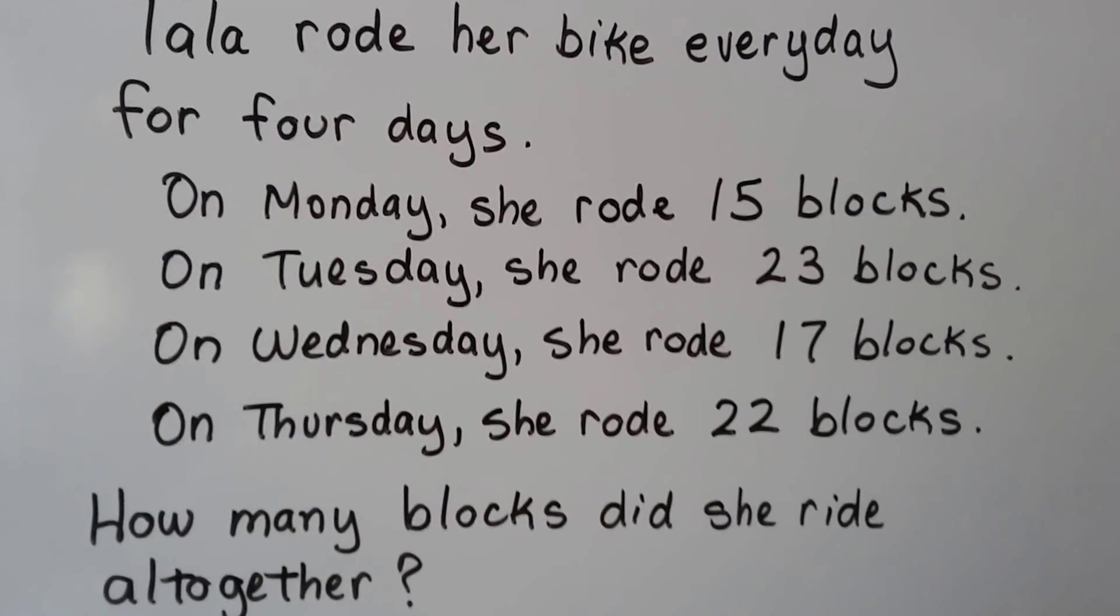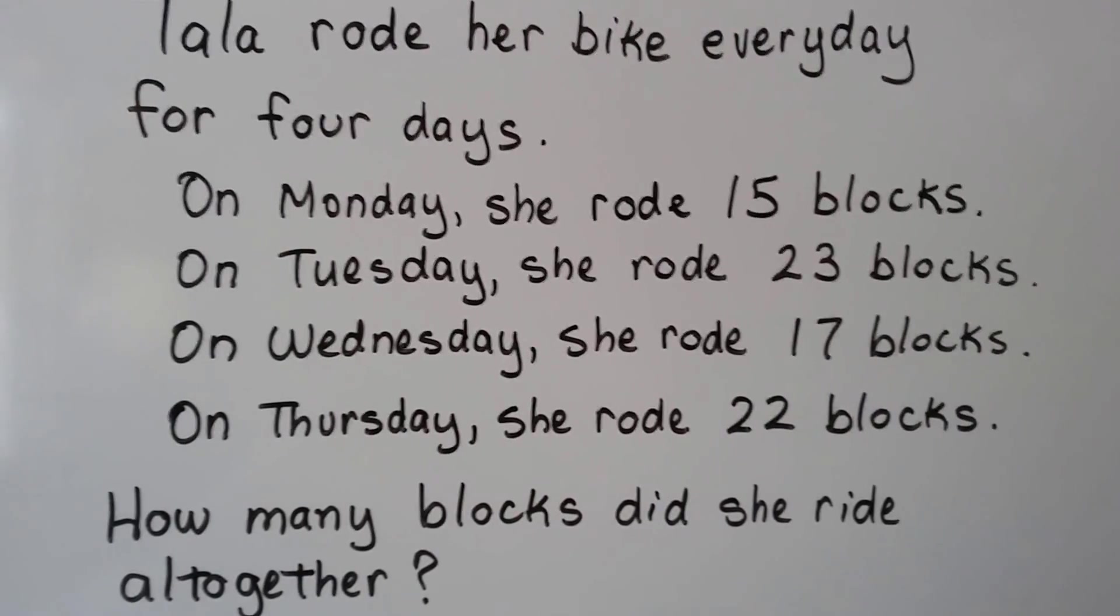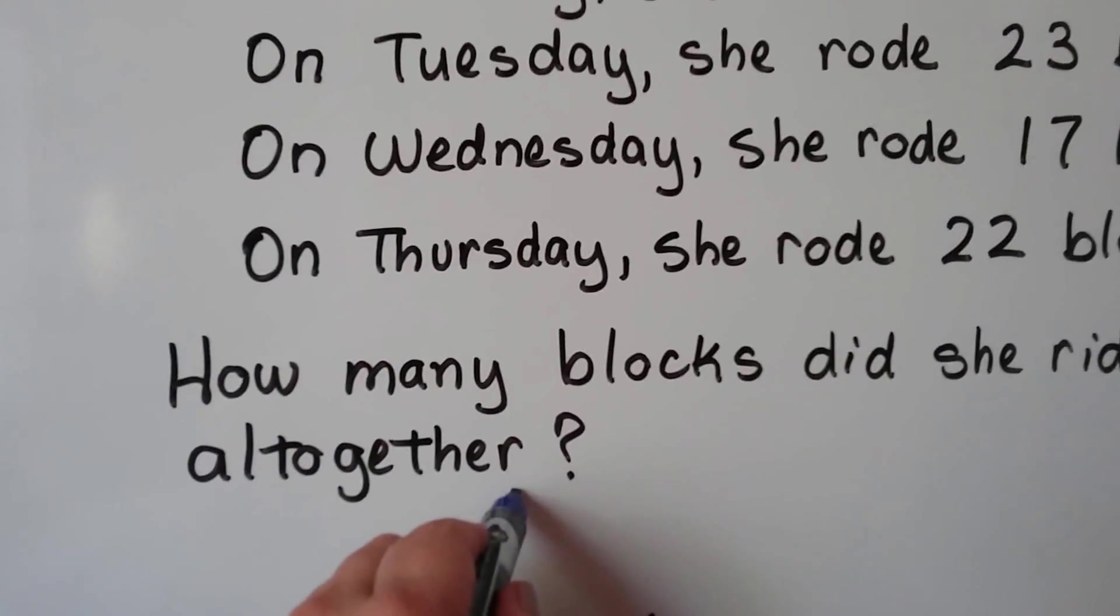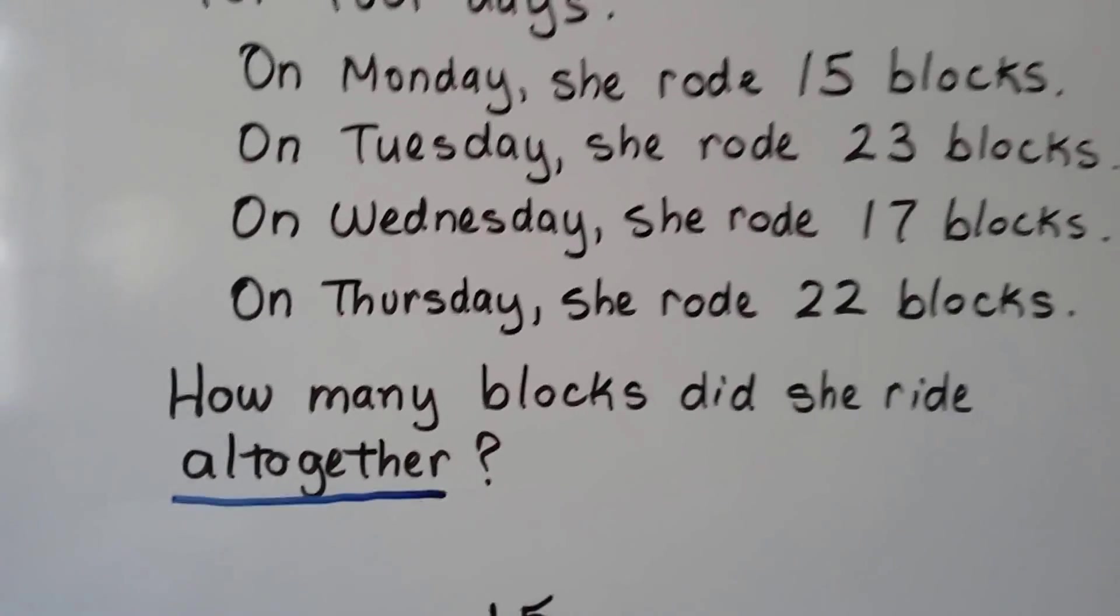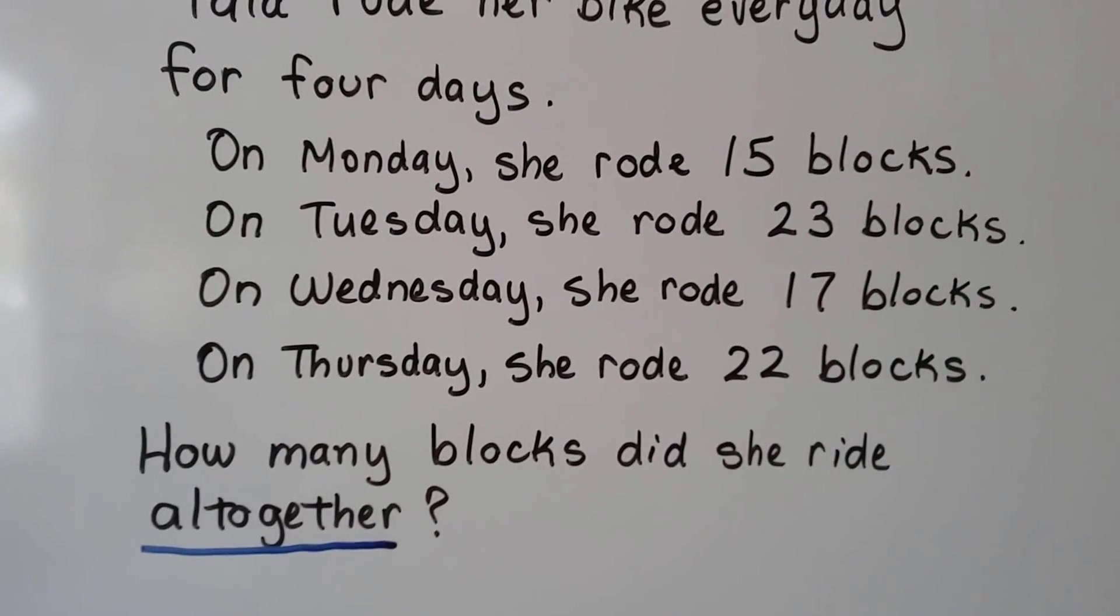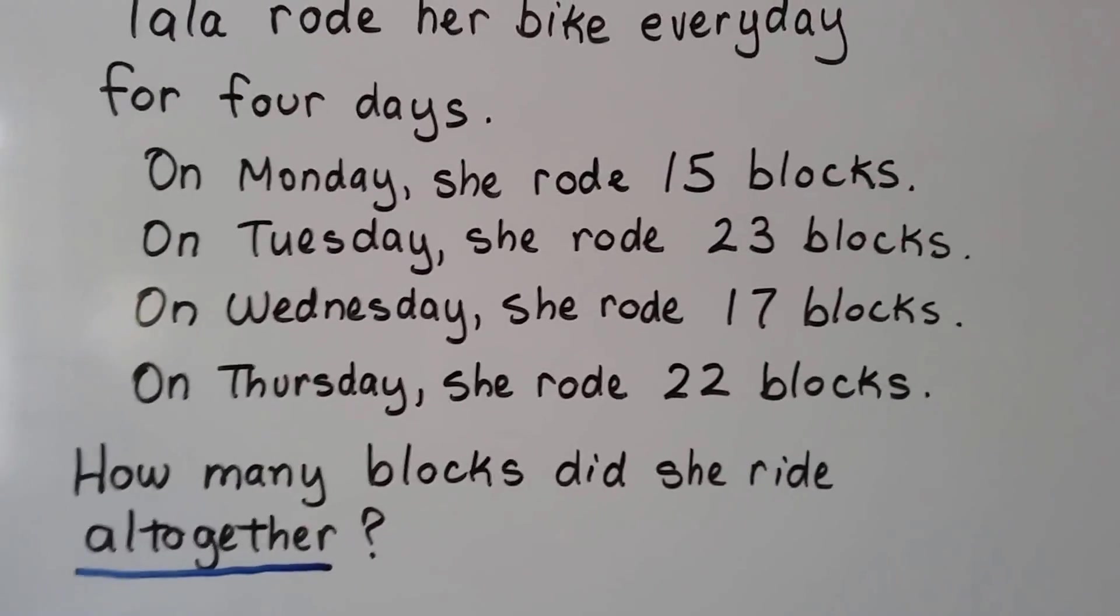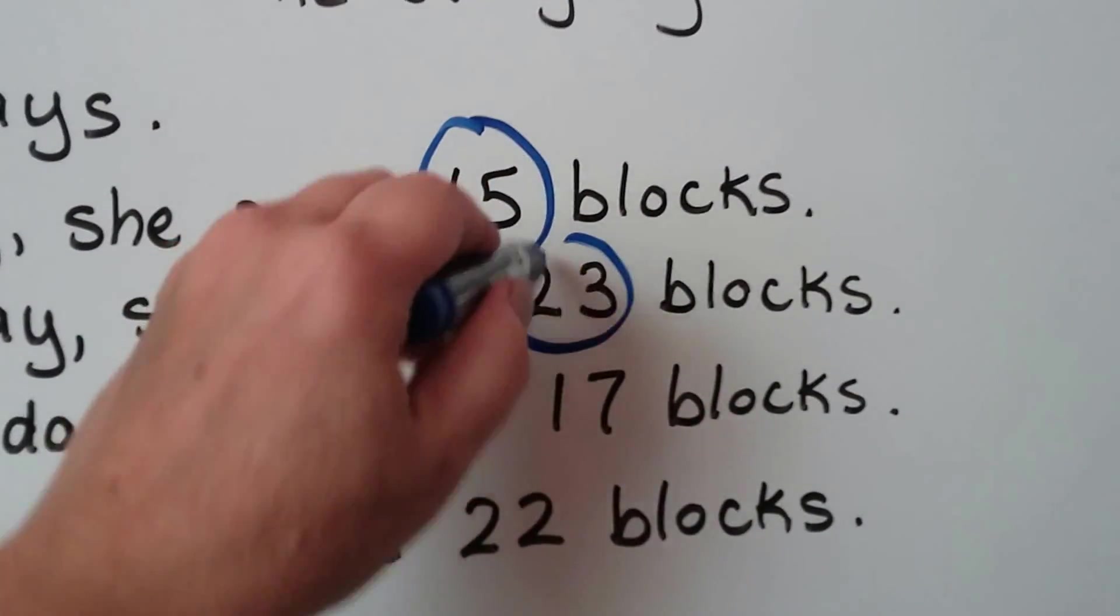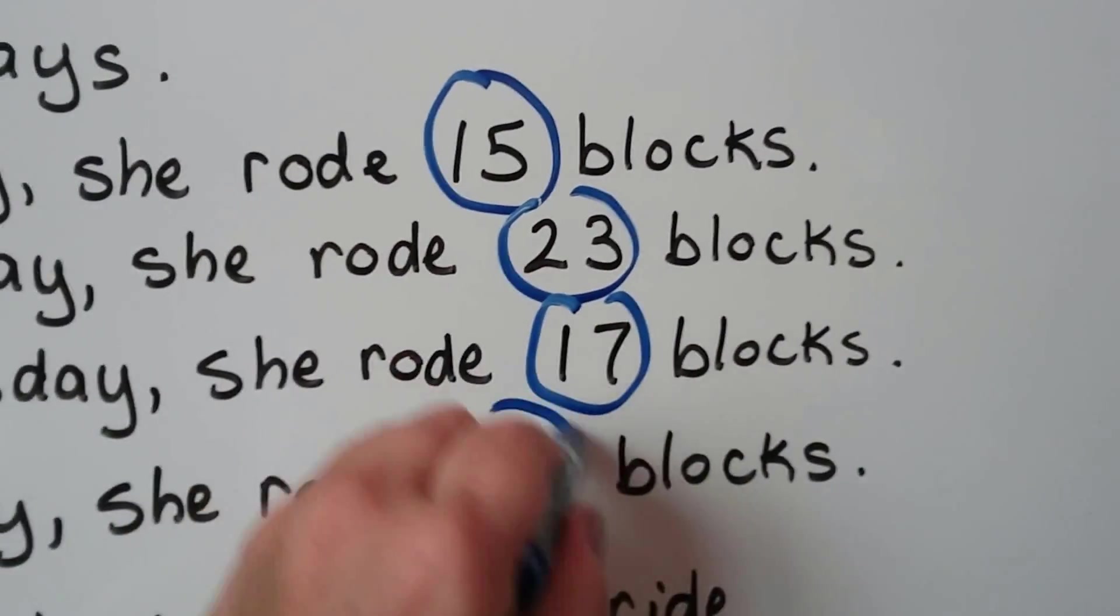So this is going to be an addition word problem because it says right here, here's a clue word—it says all together. That's our clue word that it's addition. And the important numbers that we need to add together are 15, 23, 17, and 22.